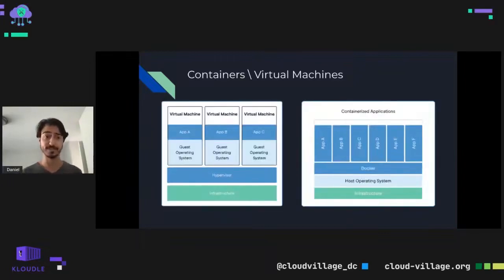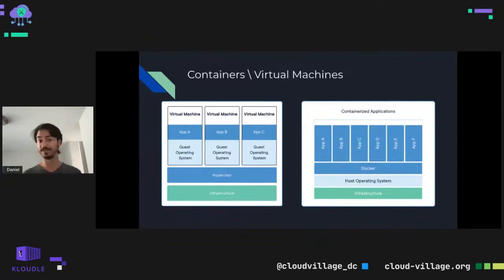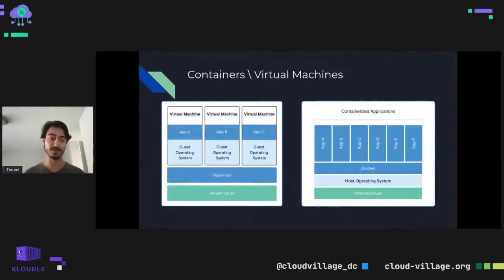On the left you can see a virtual machine infrastructure with a hypervisor managing all the machines, each with a separate operating system. On the right is a Docker machine hosting a few different applications in containers — each application is in a separate container, but they're all running on the same host operating system with the same kernel.